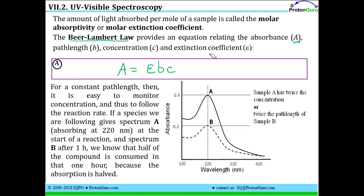In most spectrometers, you have a constant path length of one centimeter, so the path length is usually one. This makes it easy to monitor concentration over time. For example, if sample B has an absorbance of 0.2, doubling the concentration gives an absorbance of 0.4, and doubling the path length also gives 0.4. This lets scientists follow reactions over time — taking a UV-Vis spectrum at the start of a reaction, then waiting an hour. If absorbance dropped from point A to point B, we'd know half of the absorbing species was consumed after that hour of reaction time.